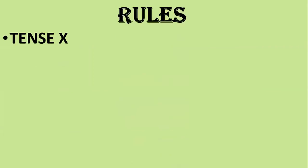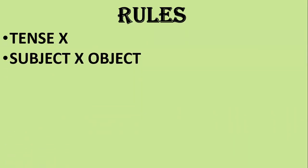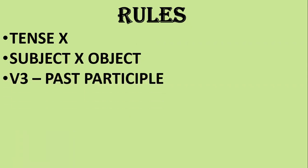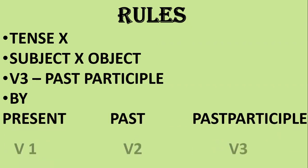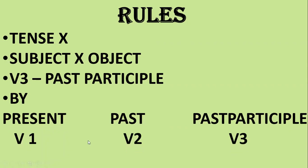So what are all the rules to change active voice into passive voice? There are a few rules. The very first thing is you needn't worry about tense change. The next one: subject and object interchange their places. Then you should know past participle — that is verb three — and you need to add the word 'by', and then verb one, verb two, and verb three — you should know about those.